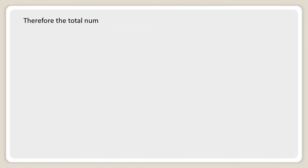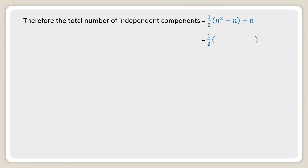Therefore, the total number of independent components equals half of (n² − n) plus n. After simplification, we get half of n(n+1).